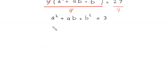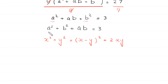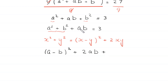Now we combine the terms A squared and B squared. Using the algebraic identity x squared plus y squared equals x minus y, whole squared, plus 2xy, we can write A squared plus B squared as A minus B, whole squared, plus 2AB. So the equation becomes A minus B whole squared plus 2AB plus AB equals 3.